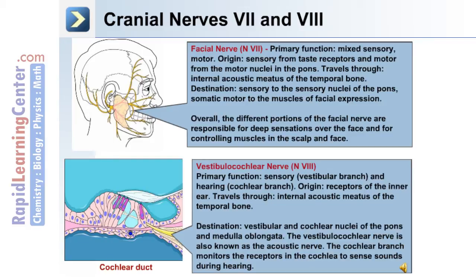The eighth cranial nerve is the vestibulocochlear nerve. Its primary function is sensory for the vestibular branch and hearing for the cochlear branch. The origin is receptors of the inner ear, and it travels through the internal acoustic meatus of the temporal bone. The destination is the vestibular and cochlear nuclei of the pons and the medulla oblongata. The vestibulocochlear nerve is also known as the acoustic nerve. The cochlear branch monitors the receptors in the cochlea to sense sounds during hearing.